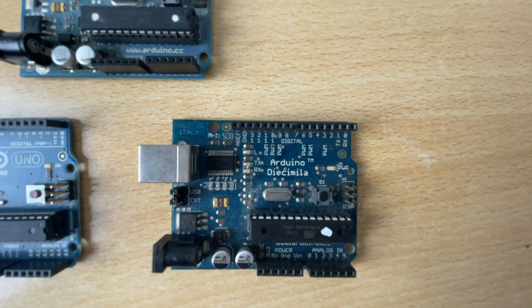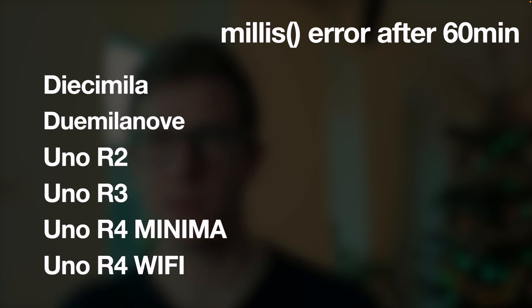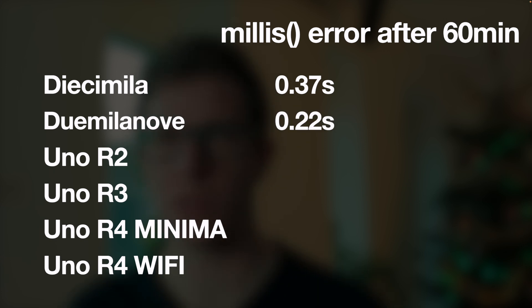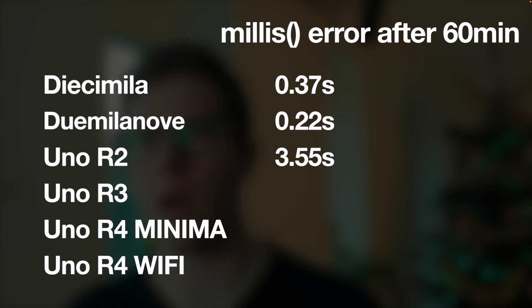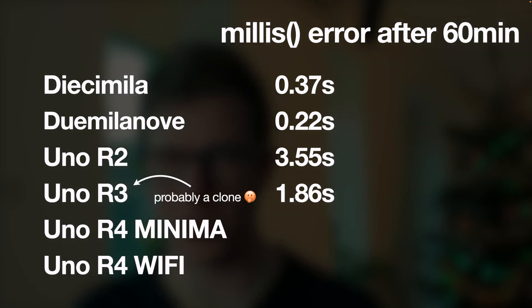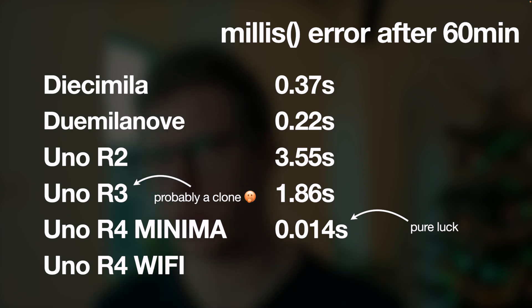I also tested other Arduino boards, including my very first Arduino — an almost 20-year-old DHG Milla. Looking at millis error in seconds after 60 minutes: Arduino DHG Milla has an error of 0.37 seconds; its successor, Arduino 2.9, has an error of 0.22 seconds; Arduino Uno R2 has 3.55 seconds; my Arduino Uno R3 has 1.86 seconds — probably an Arduino clone bought cheap on eBay. Arduino Uno R4 Minima has a millis error of just 0.014 seconds in 60 minutes, though this is pure luck, because the R4 Wi-Fi uses the same chip and oscillator yet has a millis error of 1.09 seconds.